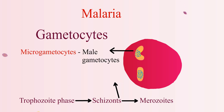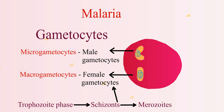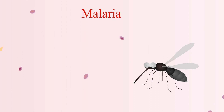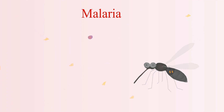The male gametocytes called microgametocytes and female gametocytes called macrogametocytes are ingested by mosquitoes when they feed blood from an infected person. The ingested parasite will then mate and grow inside the gut of the mosquito.